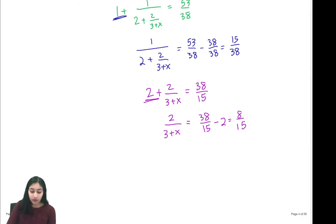Now all we do is cross multiply. We'll see that 3 plus x times 8 equals 15 times 2, which is 30. Our left hand side can be rewritten as 24 plus 8x equals 30.